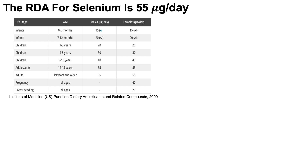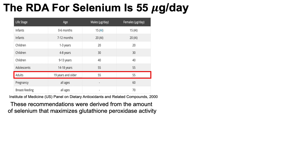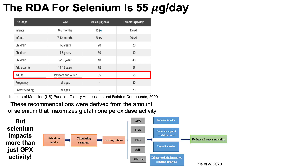What's shown here is the RDA for selenium intake across various life stages, from infants through adults. For adults older than 19 years, the recommendation is 55 micrograms per day. Slightly higher amounts are proposed for pregnant and breastfeeding women — 60 and 70 micrograms per day, respectively. These recommendations were derived based on the amount of selenium that maximizes glutathione peroxidase activity.